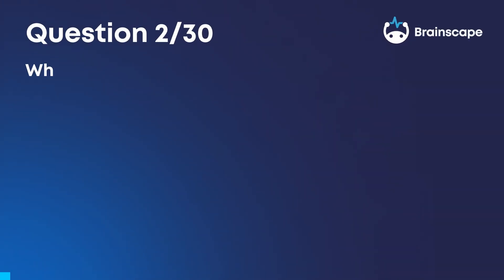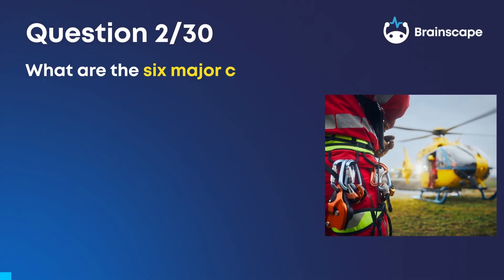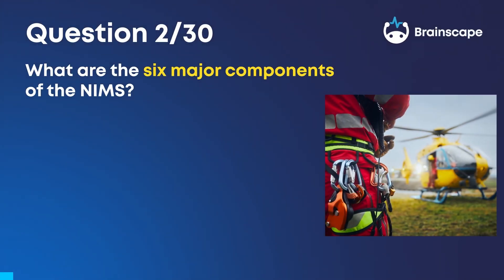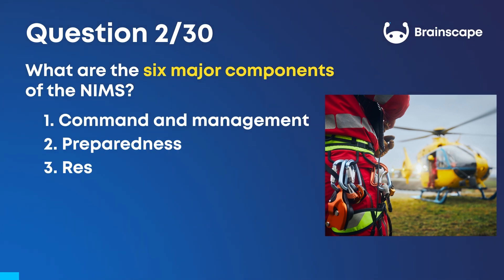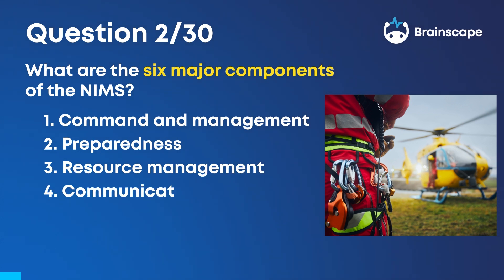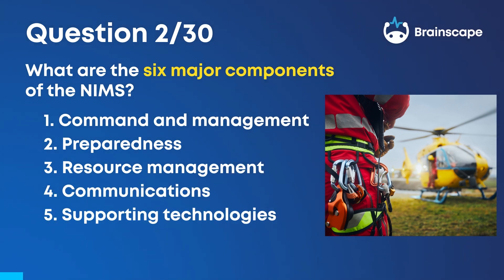Question 2. What are the six major components of the NIMS? 1. Command and Management. 2. Preparedness. 3. Resource Management. 4. Communications. 5. Supporting Technologies. And 6. Ongoing Management.